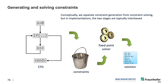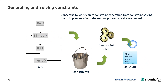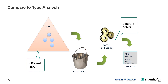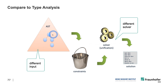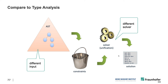Similar to what I showed earlier: we generate constraints based on the control flow graph, then a fixed point solver solves them and gives us the solution. Compared to type analysis, it's a different input and a different solver — now it's based on the control flow graph rather than the abstract syntax tree, and a unification solver is no longer sufficient because we need lattices and fixed points. So now we use a fixed point solver, but essentially it's still a similar setting.